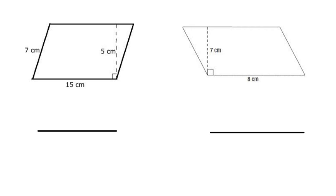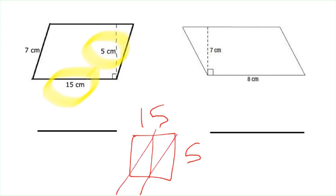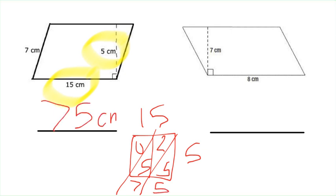Now we're going to find the area of these two parallelograms. For the parallelogram on the left, we need to figure out the base and the height. The base is 15 centimeters — setting it on that side it would lie flat. The side that says 7 centimeters is a diagonal line and would be at an angle, so that's not the base. The height makes a 90-degree angle to the base, so the height is 5 centimeters. 15 times 5: setting up a lattice box — 5 times 5 is 25, 5 times 1 is 5, giving us 75 centimeters squared.